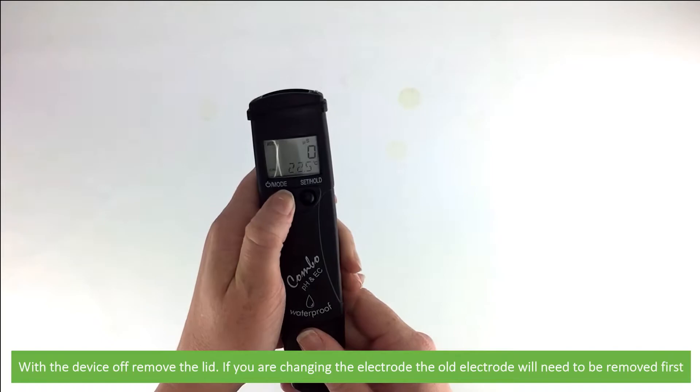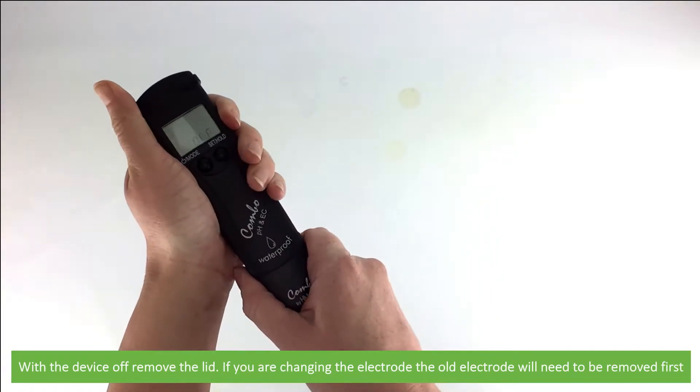With the device off, remove the lid. If you are changing the electrode, the old electrode will need to be removed first.